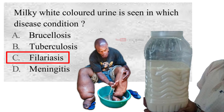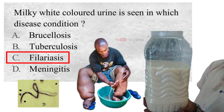Chyluria is a rare condition in which lymphatic fluid leaks into the kidneys and turns the urine milky white. It is most commonly associated with the parasitic infection Wuchereria bancrofti, but can also have non-infectious causes. Chyluria is a lymphatic flow disorder.